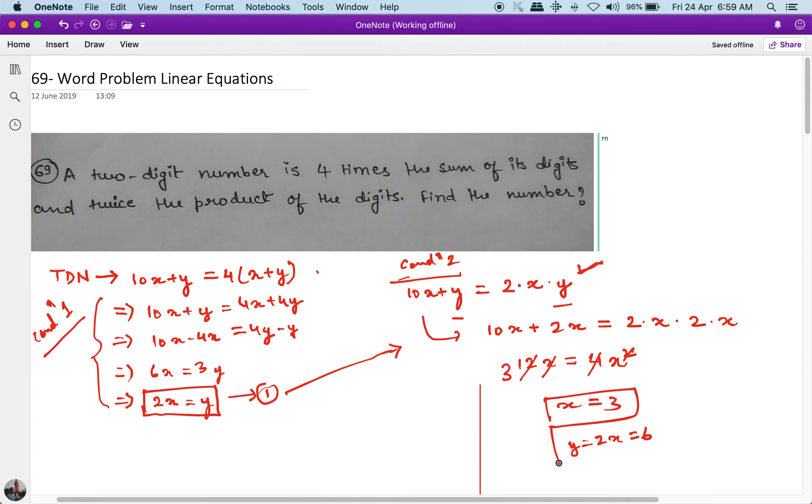And if x is equal to 3, y is equal to 2x is equal to 6, correct. And the final answer is 36.